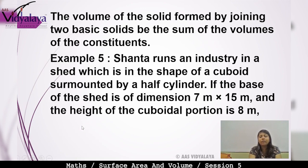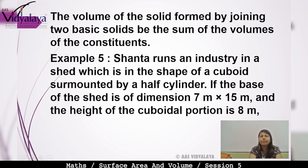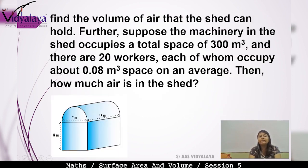The base of the shed has dimensions 7m × 15m and height is 8m. The question asks how much air can the shed hold — meaning what is the total volume of air inside the shed?